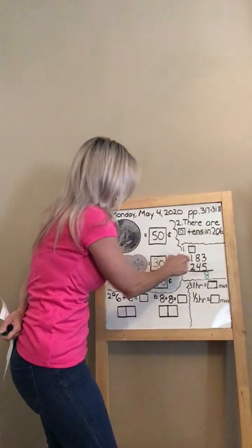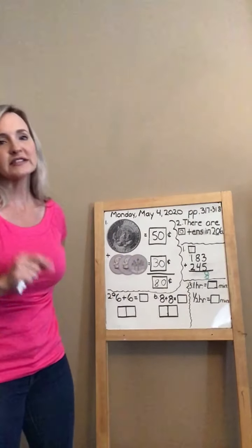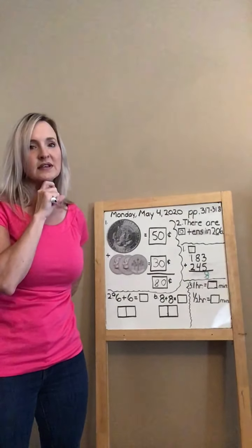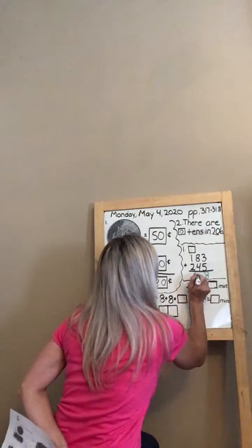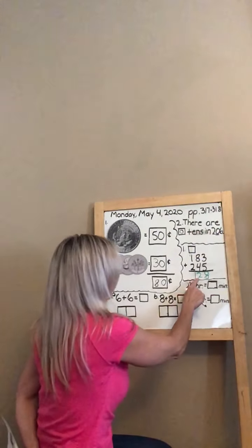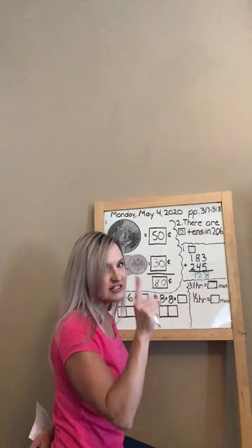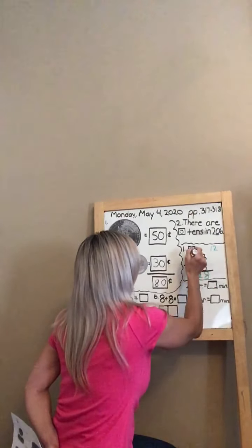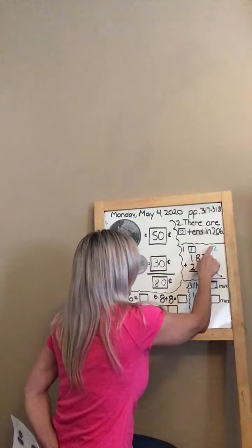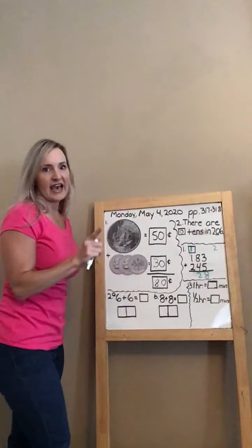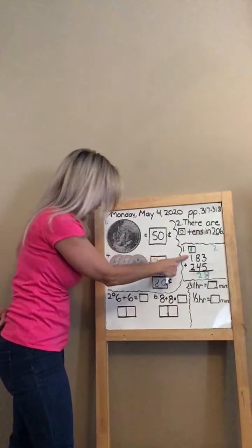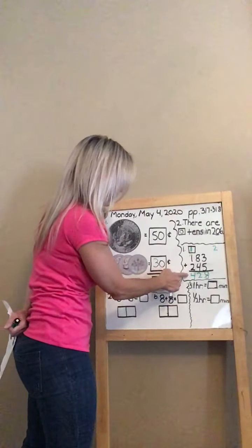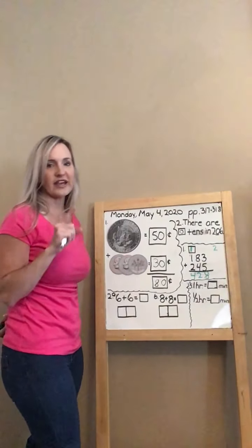Now we go to the tens place: 8 plus 4 — practicing those addition facts is so important — 8 plus 4 equals 12. Can I write 12 in the tens place? No — only one digit can go there. So I write the 2 and carry the 1 to the hundreds column. Then 1 plus 1 is 2, and 2 plus 2 is 4. So 183 plus 245 equals 428. Great job!